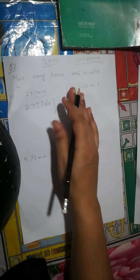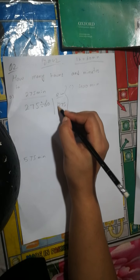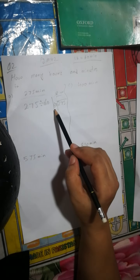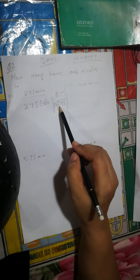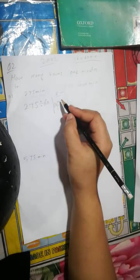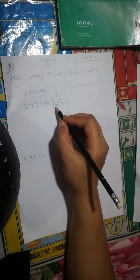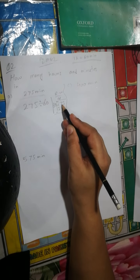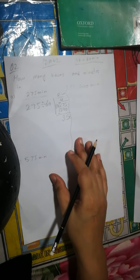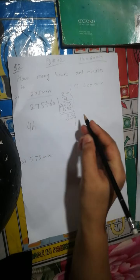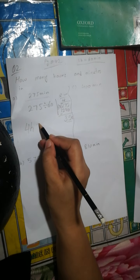Do rough work: 275 divided by 60. Read the table of 6 because the last digit is 0. 6 × 4 = 24, so 60 × 4 = 240. 275 minus 240: 5 minus 0 is 5, 7 minus 4 is 3 — remainder is 35. The number on top is 4, which is the hours, and the remainder 35 which is less than 60 is the minutes. So 275 minutes = 4 hours and 35 minutes.